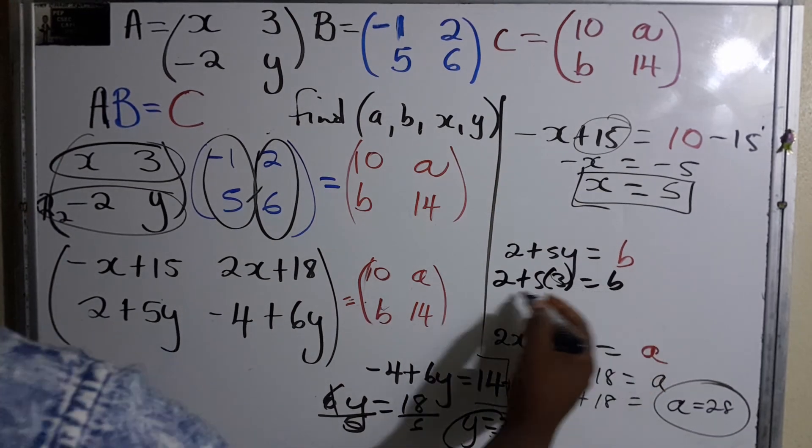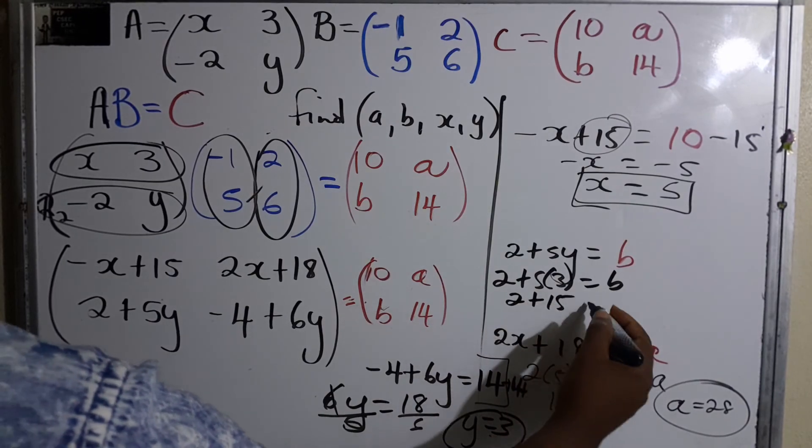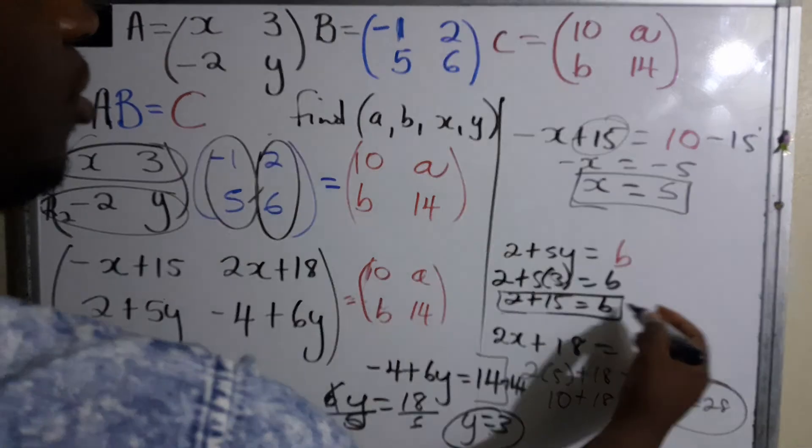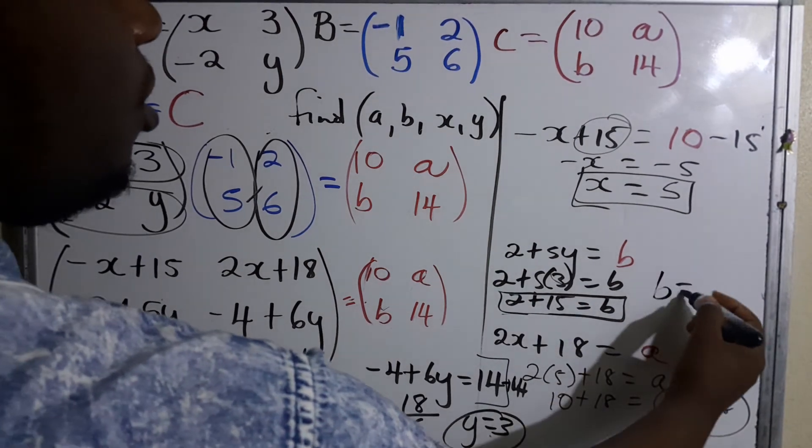So guess what, can we have say y equal to 3? Now we leave this: 5 times 3 is 15. So therefore, b is equal to 15 plus 2, which is 17.